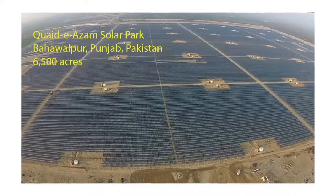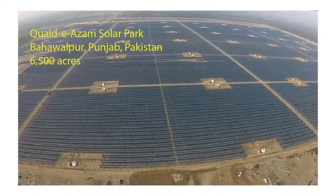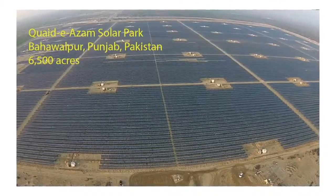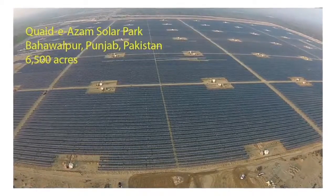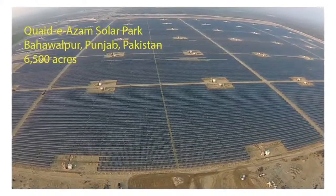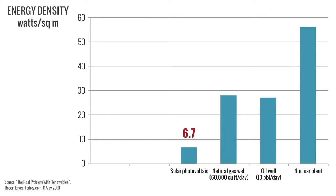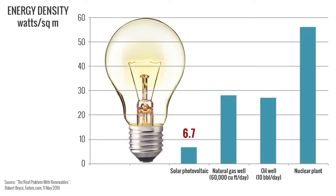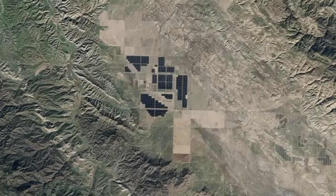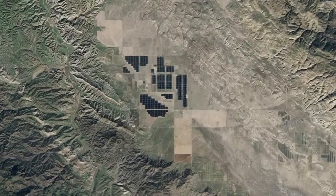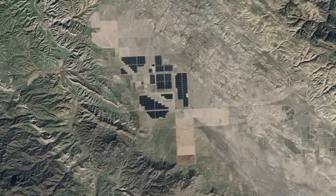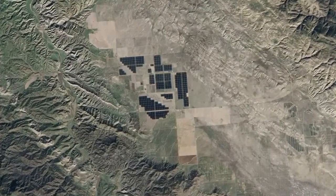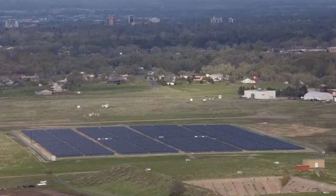Solar voltaic systems also require significant space because these systems can produce only 6.7 watts per square meter. To put this in perspective, a typical 60-watt light bulb uses nearly 10 times the capacity of one square meter of a solar voltaic array. Often portrayed as the poster child for green renewable energy, solar also poses significant, little-publicized environmental risks.